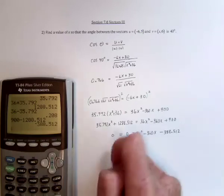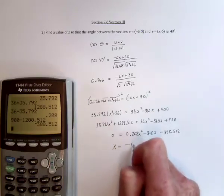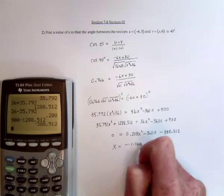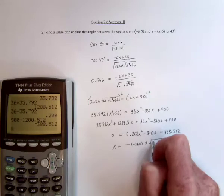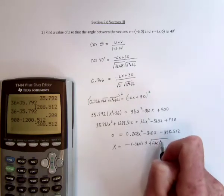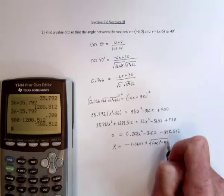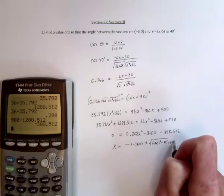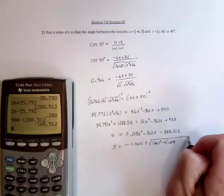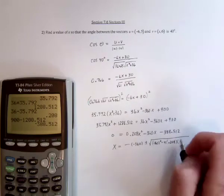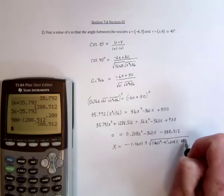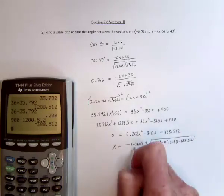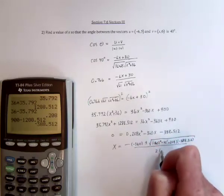Next up, the quadratic formula. So x is equal to negative b plus or minus the square root b squared minus 4 times a times c, 388.512. And then the whole thing is divided by 2 times a.